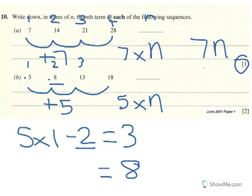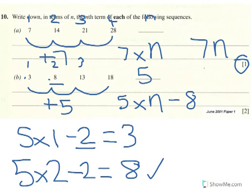Check it with the second term. I want an answer of 8. I've got to do 5 times 2, because it's the second term. Does take away 2 work? 5 times 2 is 10. Take away 2 is 8. Done. I know the second part is going to be 8. Let's write that a bit better. 5n take away 8.